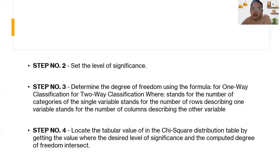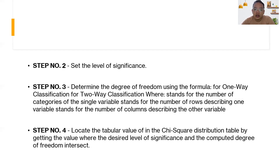Step number two: set the level of significance. Step number three: determine the degree of freedom using the formula — for one-way classification and for two-way classification — where k stands for the number of categories of a single variable, r stands for the number of rows describing one variable, and c stands for the number of columns describing the other variable.